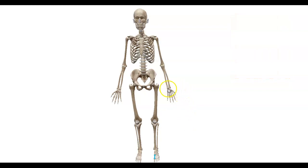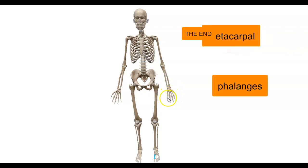In the hand we have eight bones right here called the carpal bones. Metacarpal bones. And phalanges.